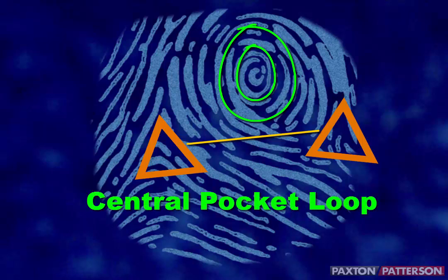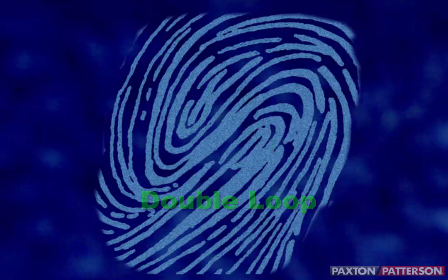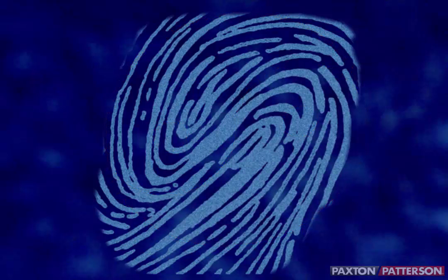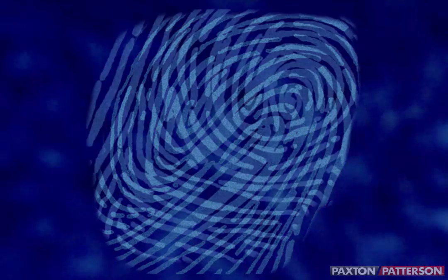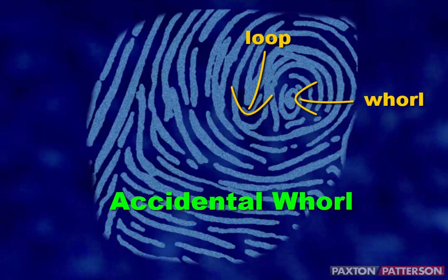If the imaginary line does not touch the circular ridge pattern at all, the whorl is a central pocket loop. A double loop whorl has two loops combined into one print — it resembles a yin-yang symbol with two teardrop-shaped halves. And if a print has two or more patterns, or does not fall clearly into any other category, it is considered an accidental whorl.